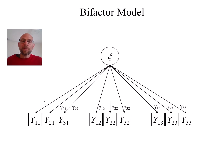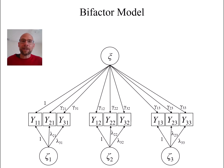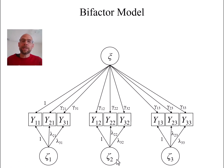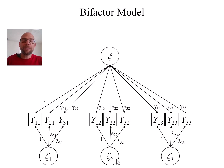Furthermore, we also have specific factors that influence only the variables at a given time point. For example, zeta 1 is the specific factor for time 1, and zeta 2 is the specific factor for time 2. These specific factors account for residual variance at each time point that cannot be explained by the common trait factor.